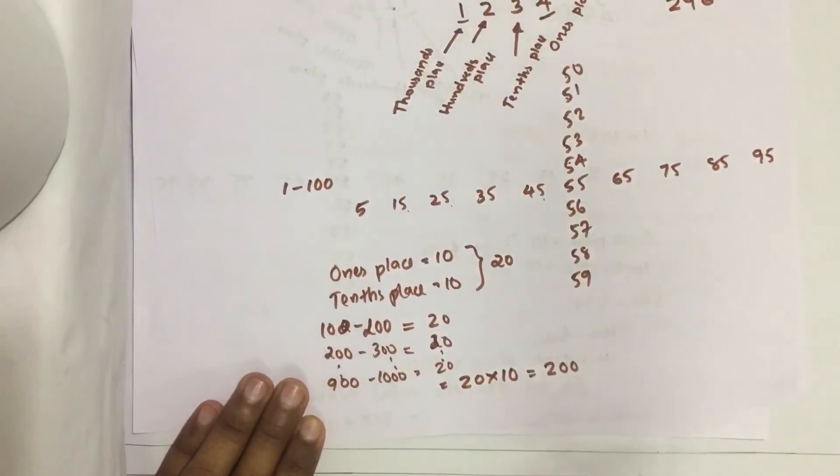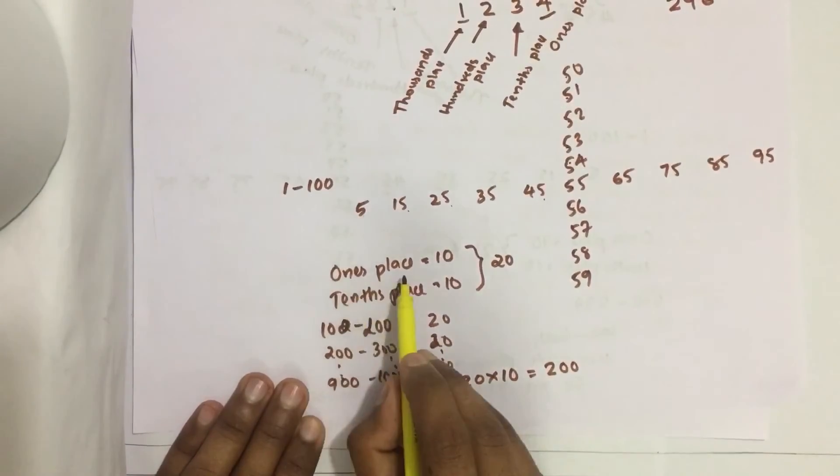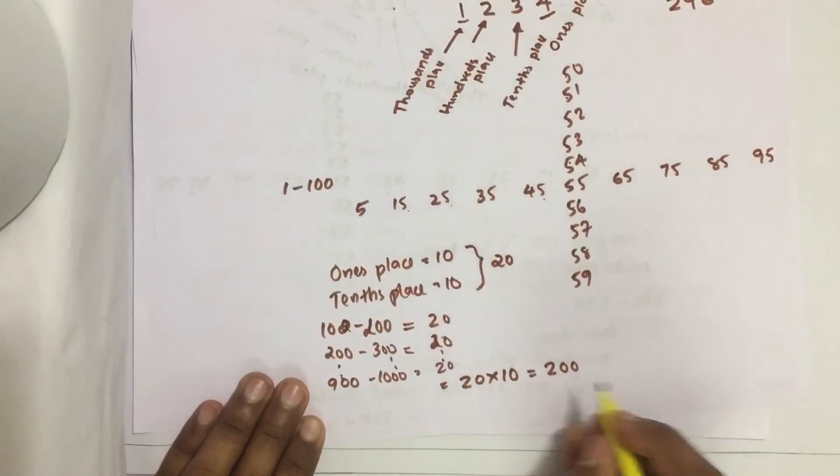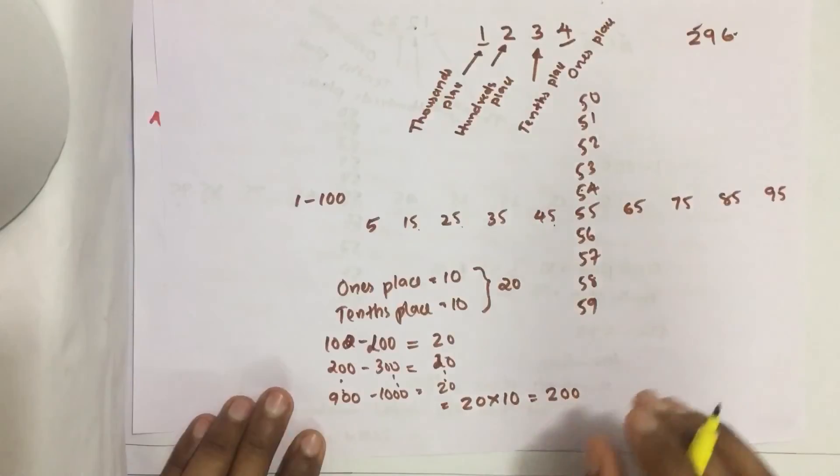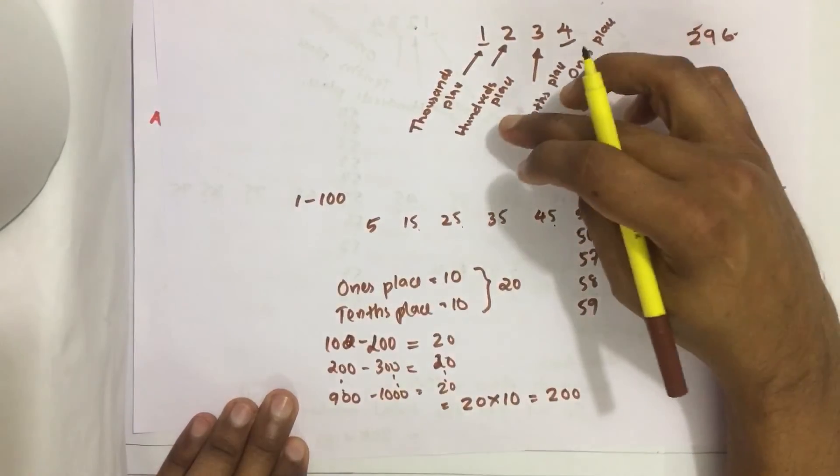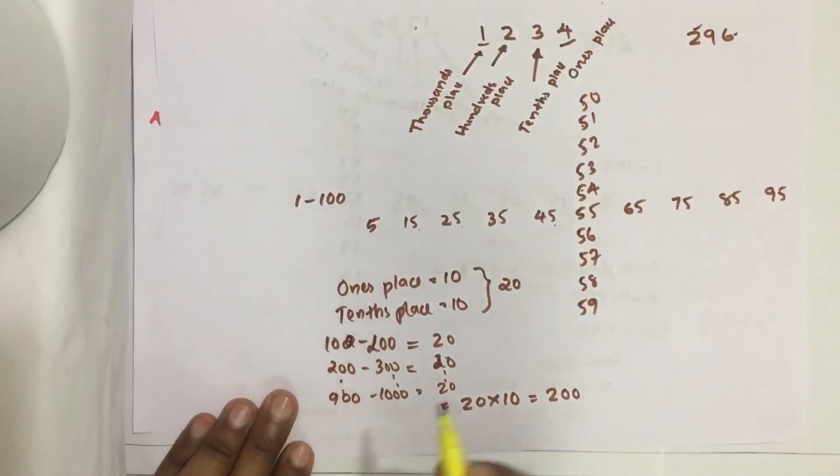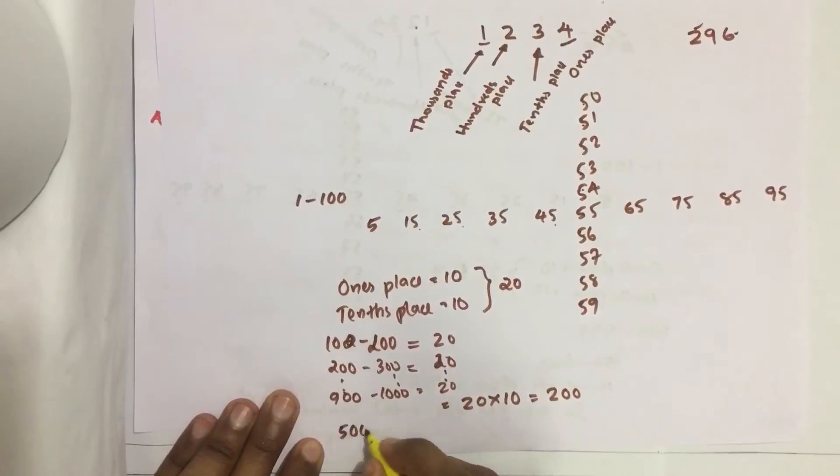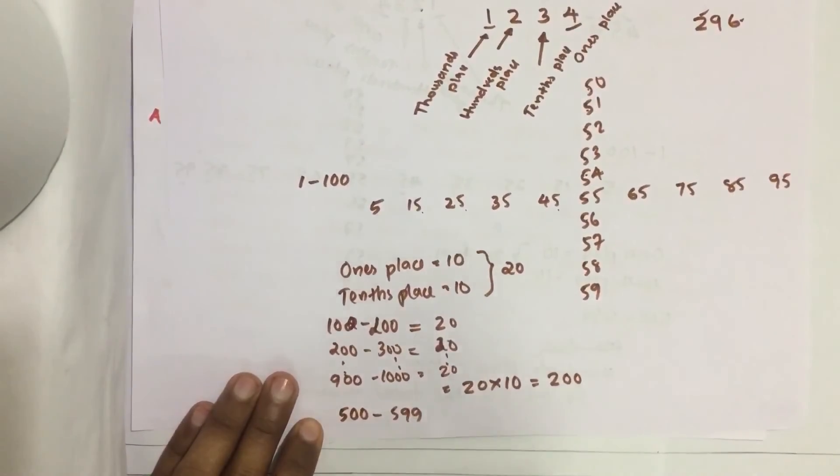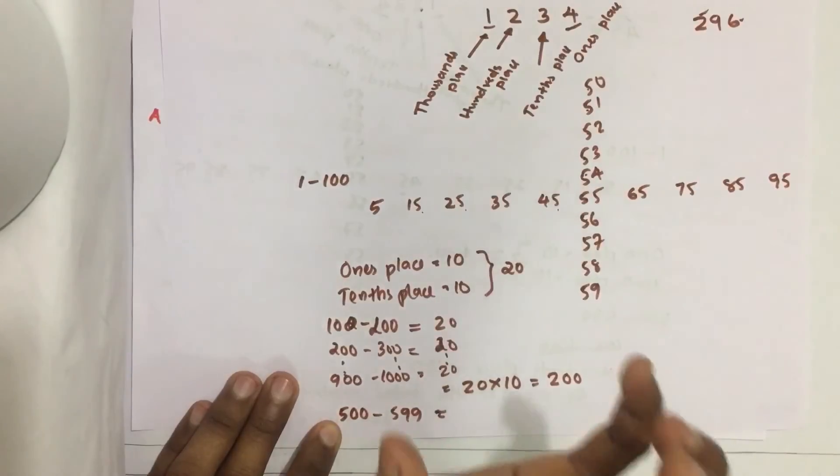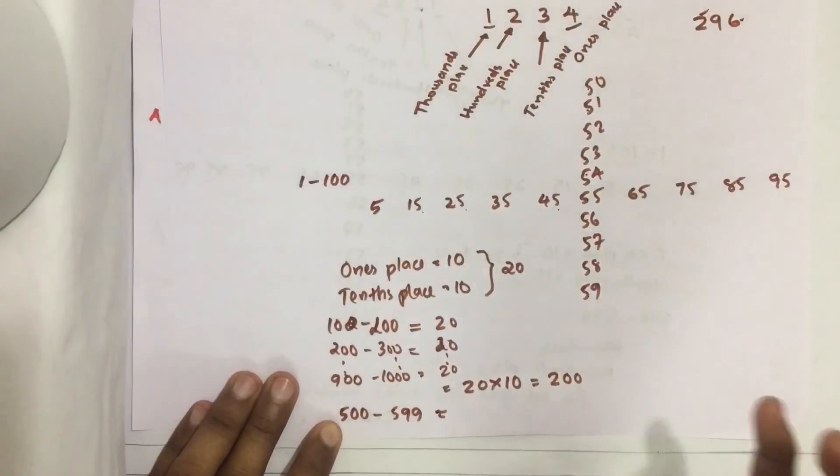Now we see how many 5's are there in 100's place. We know that digit 5 is appearing in 100's place only while counting 500 to 599. There are how many 5's? 100 5's. 500 to 599, there are 100 numbers, and in all these numbers the 100's place starts with 5, so 100 5's are there.